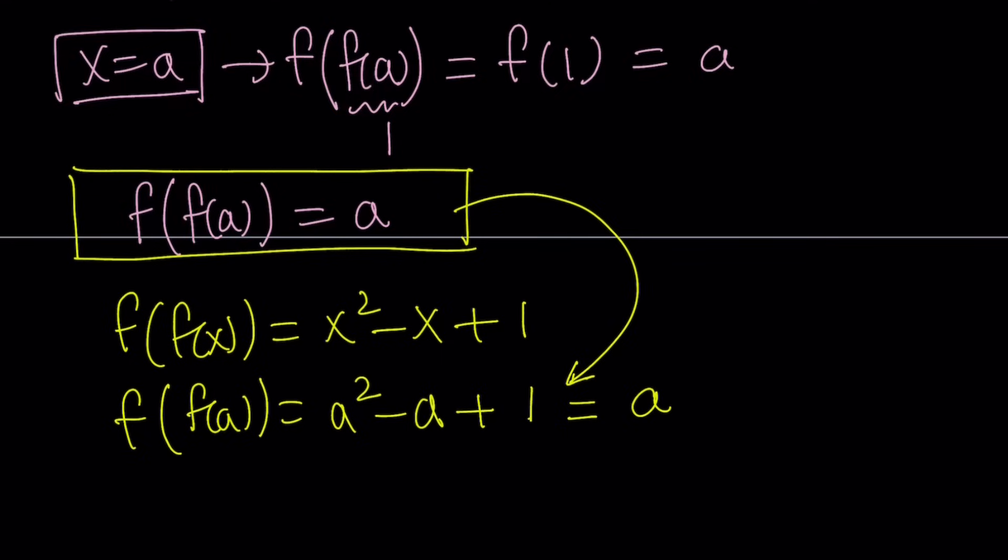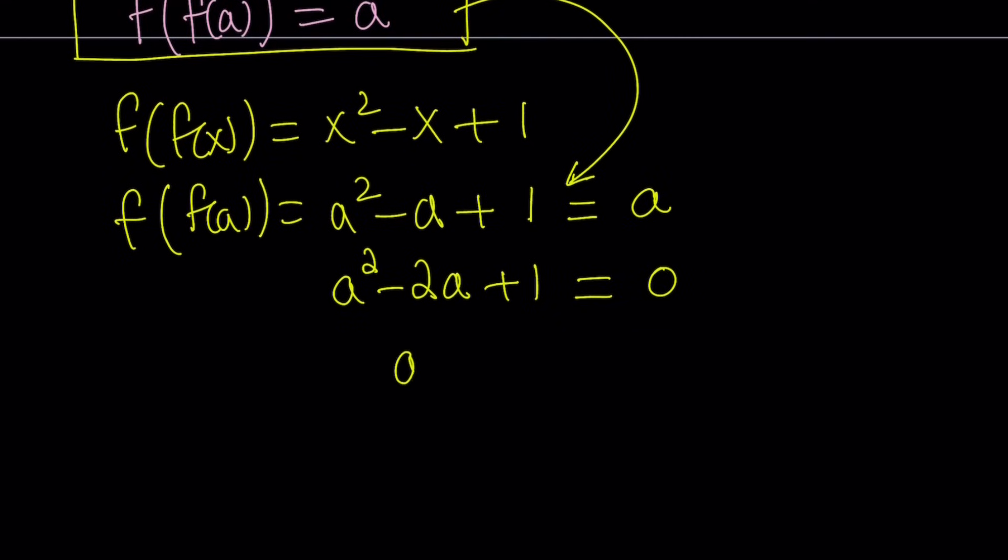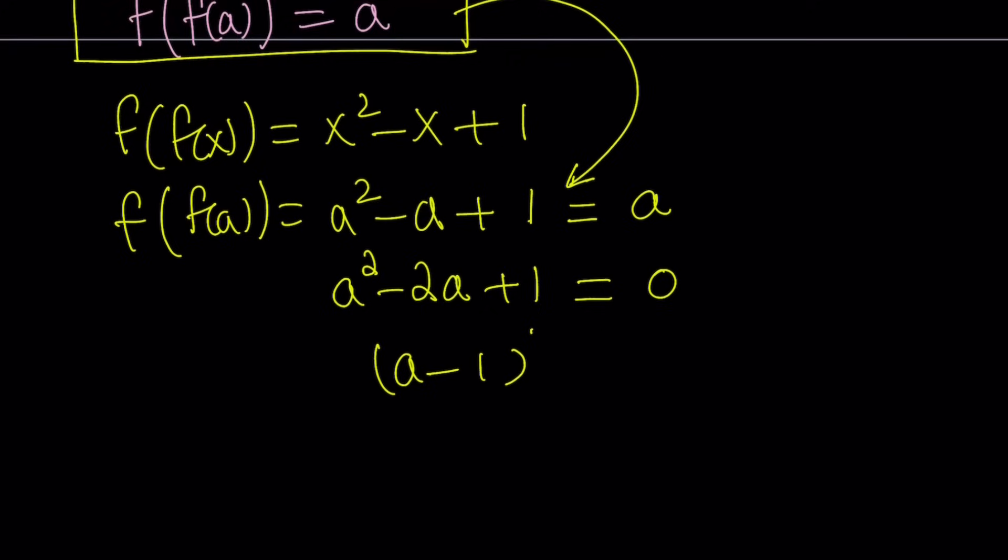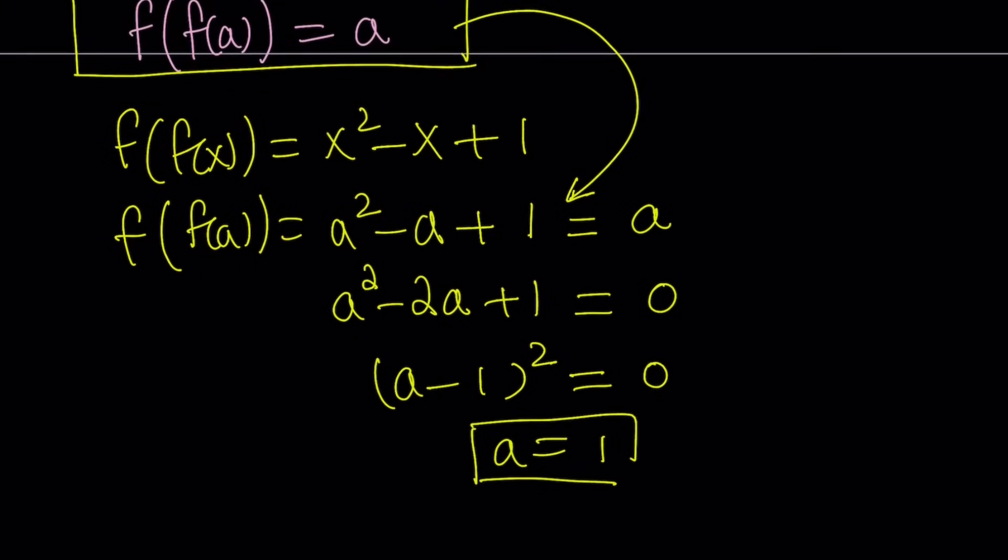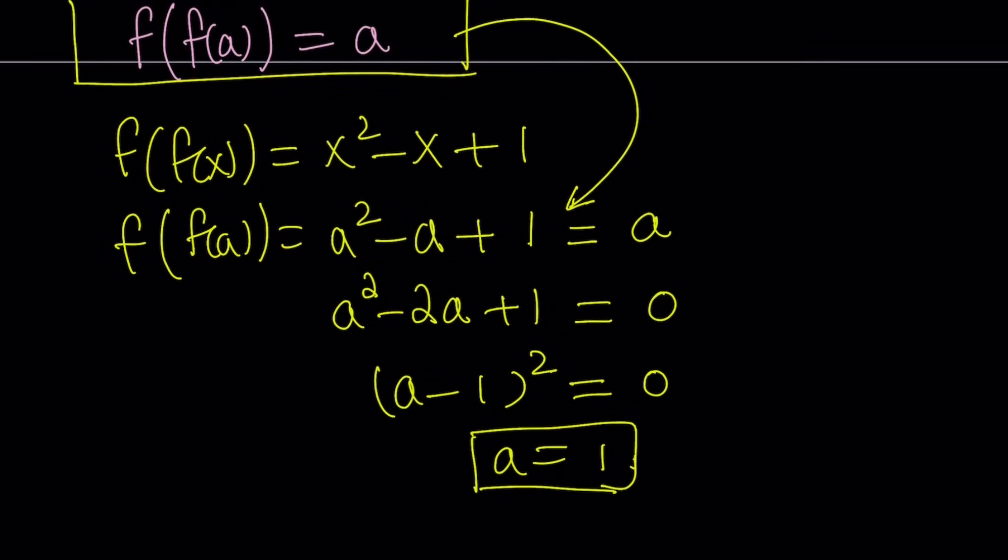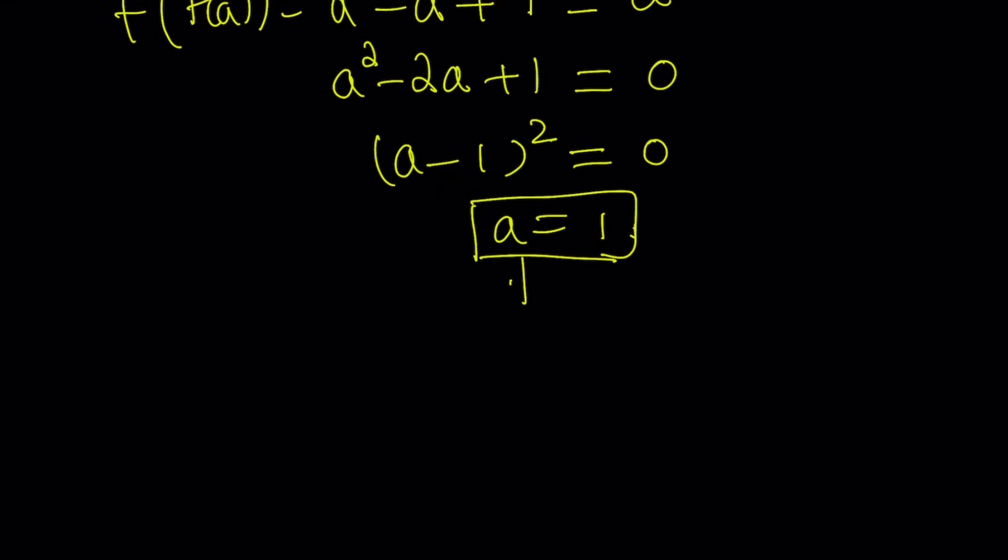Let's put the a's on the same side. We get a squared minus 2a plus 1 is equal to 0. And notice that this is equivalent to a minus 1 squared, which means a is equal to 1. Awesome. But what is a? a is f of 1, remember? That was our initial assumption. So since we found the value of a, which means we found f of 1. So this implies f of 1 equals 1.